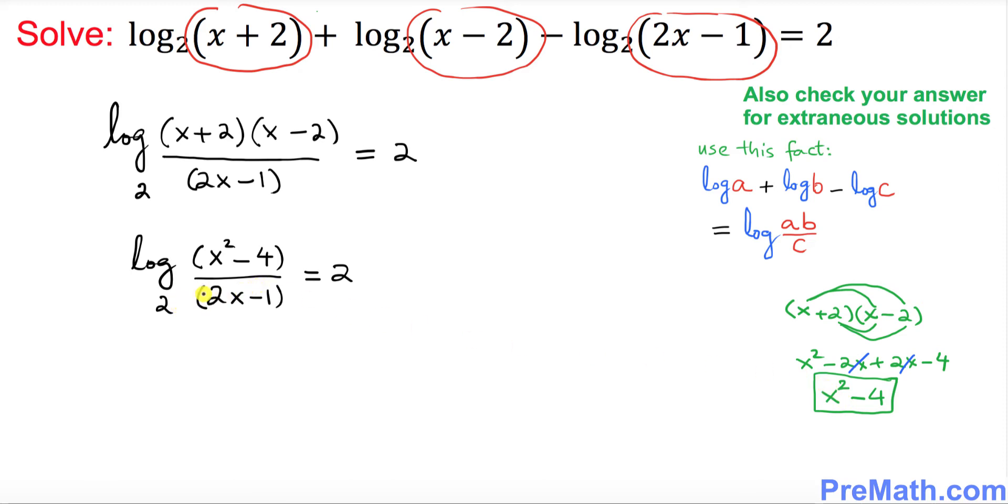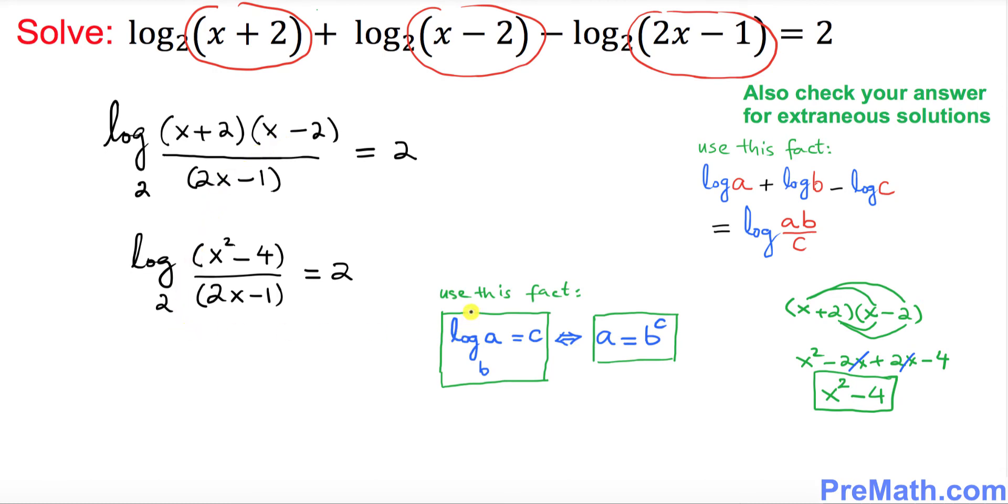So the next step we want to convert this logarithmic equation into an exponential one. We will be using this fact. If you want to convert from logarithmic equation to exponential, so this base B is 2, this part is N A, this is C. So we can write this one as X squared minus 4 divided by 2X minus 1 equals to 2 power 2.